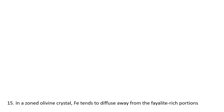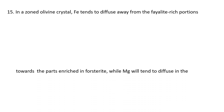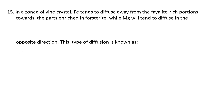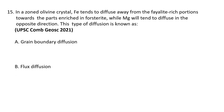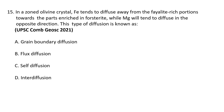Question 15: In zoned olivine crystals, iron tends to diffuse away from the fayalite-rich portions towards parts enriched in forsterite, while magnesium tends to diffuse in the opposite direction. This type of diffusion is known as: (a) grain boundary diffusion, (b) flux diffusion, (c) self-diffusion, or (d) interdiffusion. The correct option is D — interdiffusion. Most crystals have simple reverse zoning patterns in olivine with higher and variable forsterite content at their rims (about 75 to 82) than at the interiors.